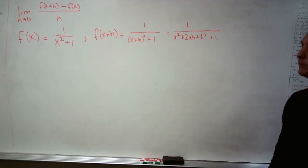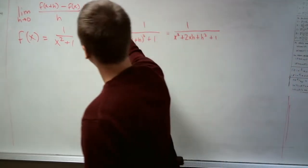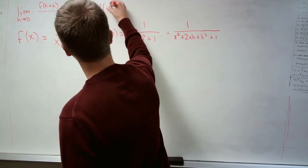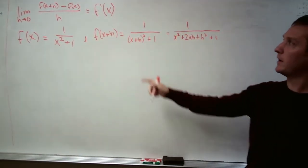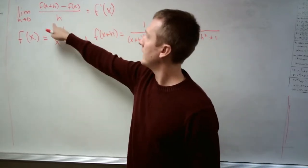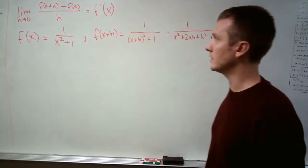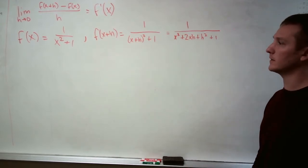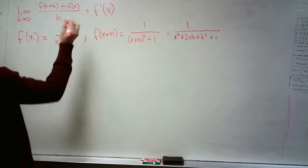And then we just take what we know and plug it into this derivative definition. So we now have every piece, h is just some sort of dummy thing that goes down to zero anyway, so we don't need to worry about that at this moment.